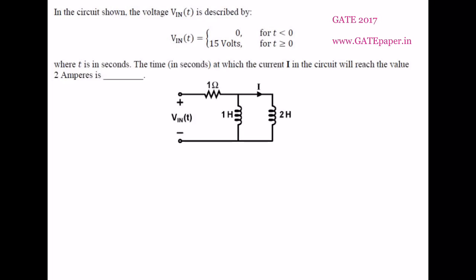In this question we are going to calculate the time required for the current flowing through a 2 henry inductor to reach 2 amperes. We need to find in how much time the current flowing through the 2 henry inductor will reach 2 amperes, and the input voltage is given as a DC voltage.